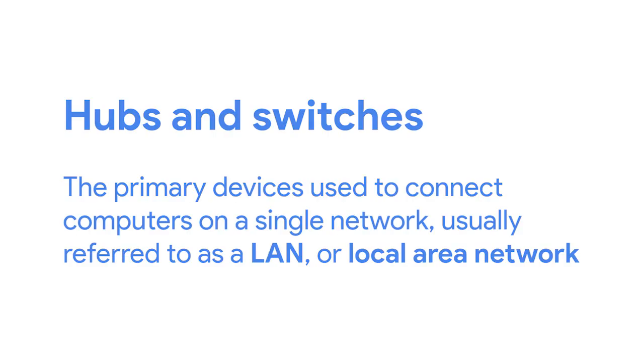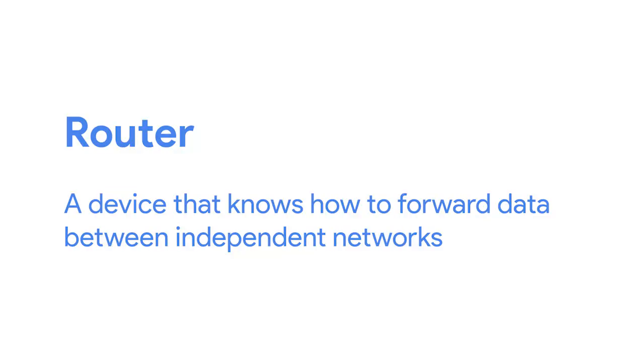Hubs and switches are the primary devices used to connect computers on a single network, usually referred to as a LAN or local area network. But we often want to send or receive data to computers on other networks. This is where routers come into play. A router is a device that knows how to forward data between independent networks.